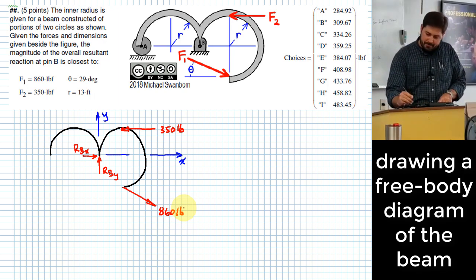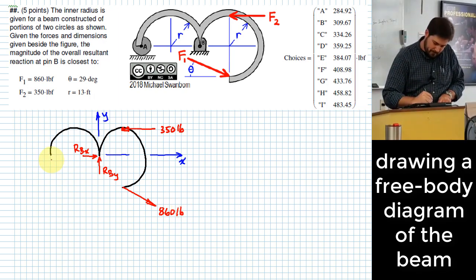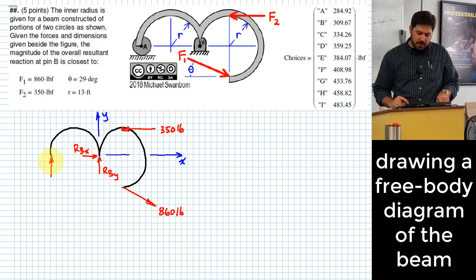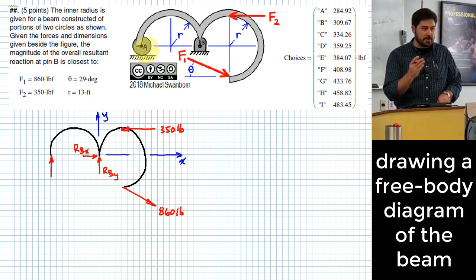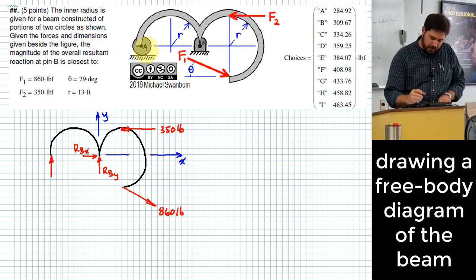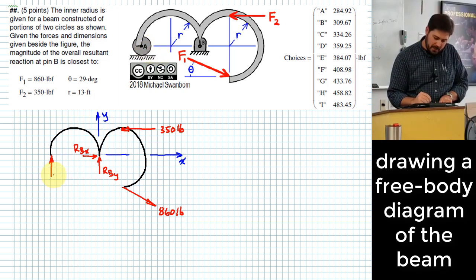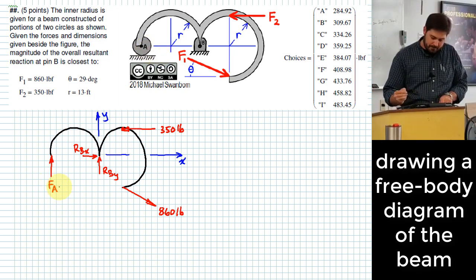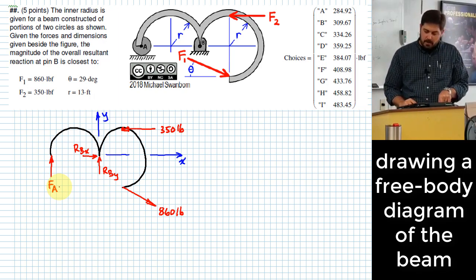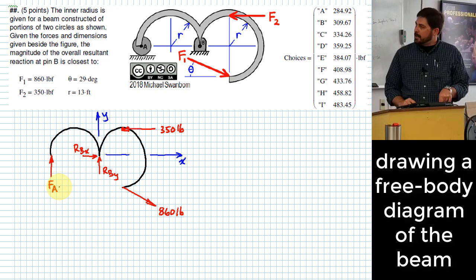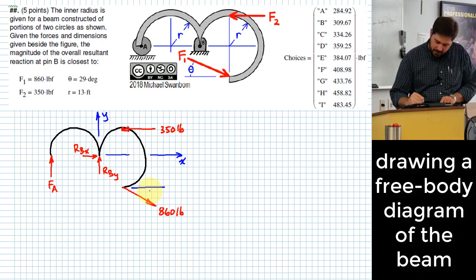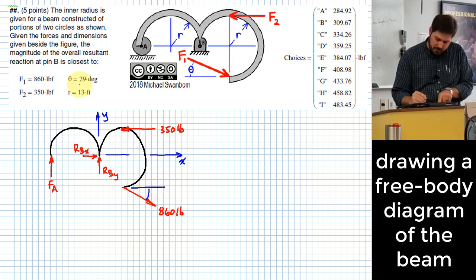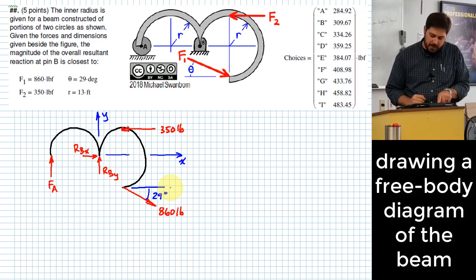I've got this force over here. Since it's a roller at A, I only have a force perpendicular to the surface it rolls on. So I put that in, and I don't actually know what that value is yet, so let me just call that F sub A. Now, what else should I have on my free body diagram to make my life easier? I probably do know something here, right? This angle right here was 29 degrees. That's a good one to have. What else?